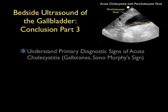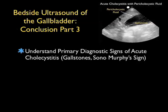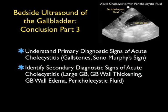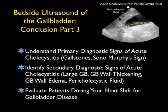In conclusion, thanks for tuning in for this SoundBytes module going over part three of bedside ultrasound of the gallbladder. Hopefully now you understand the primary diagnostic signs of acute cholecystitis on bedside imaging — that is, the presence of gallstones and a sonographic Murphy sign — which have a very high yield. I hope also that you can identify the secondary diagnostic signs: a distended gallbladder greater than 10 centimeters, gallbladder wall thickening greater than 3 millimeters, the presence of gallbladder wall edema, and the presence of pericholecystic fluid.